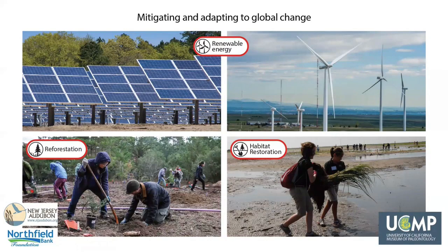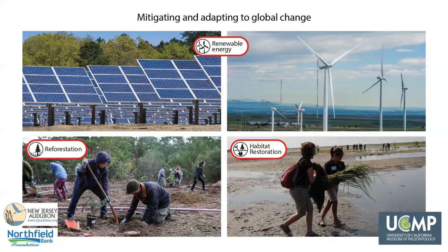As we recognize how we are changing the Earth, we can also develop technology and solutions that can sustain human life and ecosystems. Our ability to innovate will hopefully allow humans to mitigate climate change and be resilient in a changing world. Restoring habitats such as coastal environments can benefit human populations by buffering cities from rising sea levels. Forests can absorb greenhouse gases through photosynthesis and provide a sustainable source of resources. Innovations in renewable energy such as solar and wind power can provide energy we need for modern life without contributing to global warming.